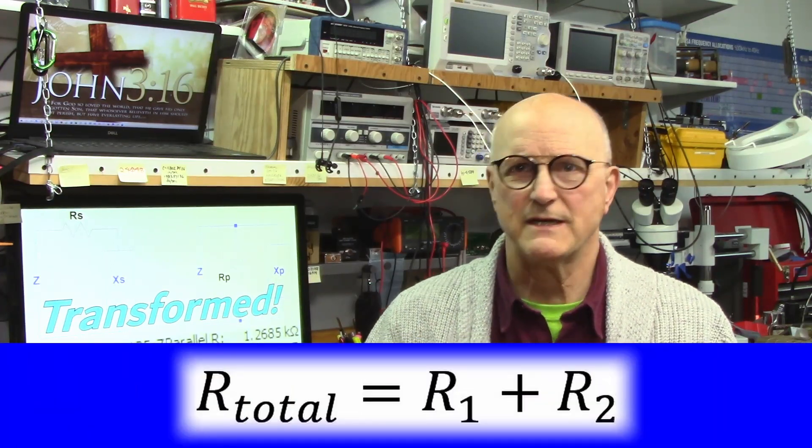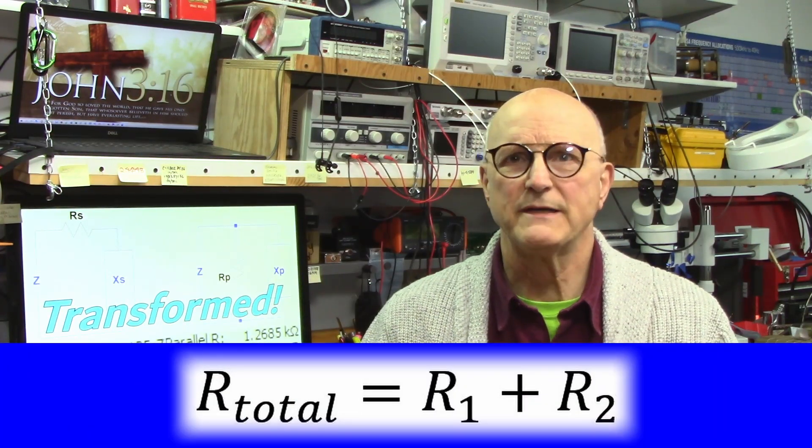Now remembering basic electronic circuit analysis, the value of a series combination of two resistive components is found by adding the two values together. So the total resistance is equal to R1 plus R2. Now when we consider the equation for impedance, the R term is a pure ideal resistance.